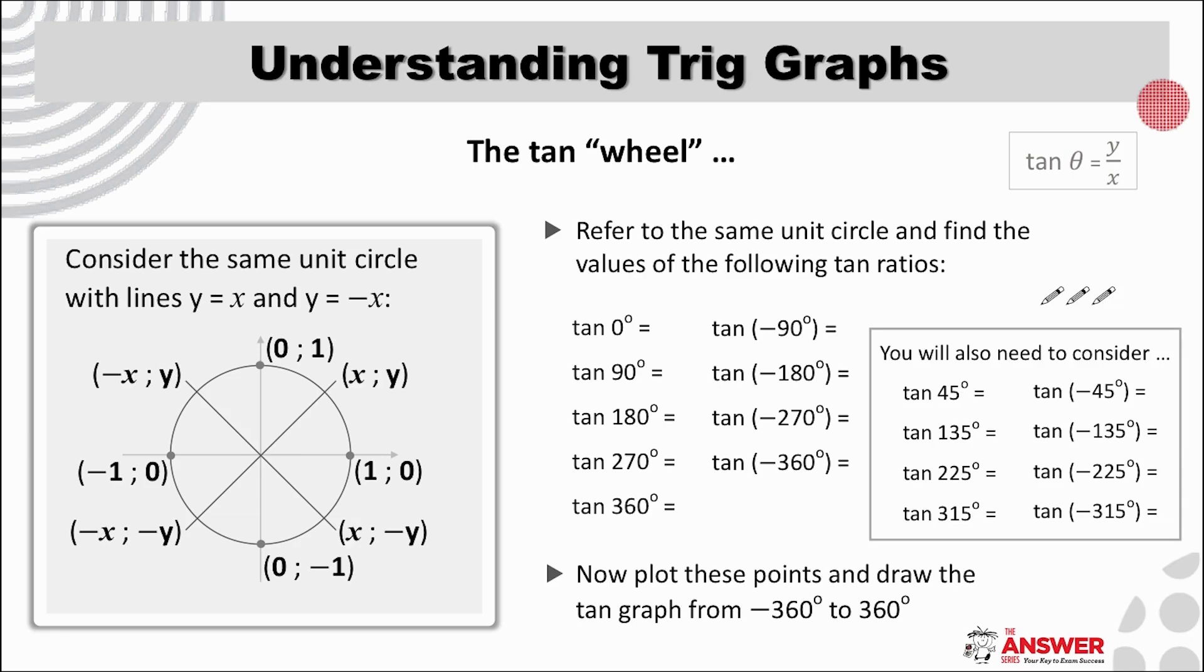Let's choose the angle of 45 degrees and consider the tan ratios of its family. This gives us points along the unit circle where x and y are equal in value. You will just need to be mindful of the signs of x and y in each quad. Pause now again to give yourself a chance to complete these tan ratio values, and then go ahead and plot them on a system of axes.